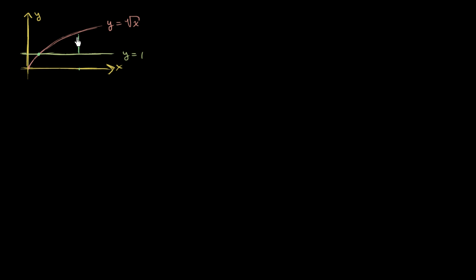So what would our figure look like? Well, we're going to rotate it around like this. And so your figure is going to look — you could call it almost like a cone head if you view it on the side, or something like a bullet, but not quite. But it would be a shape that looks something like that. So hopefully we can visualize this. We've done this several times already. But let's think about how we could actually figure out the volume of this solid of revolution.